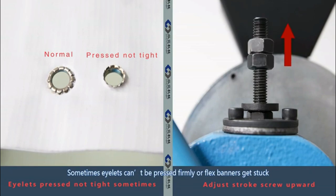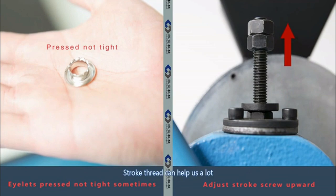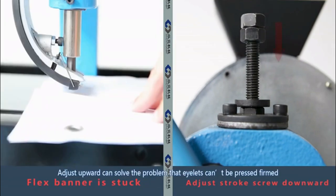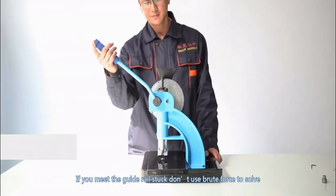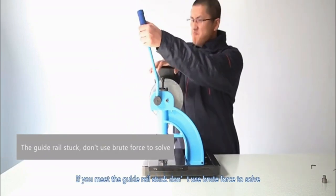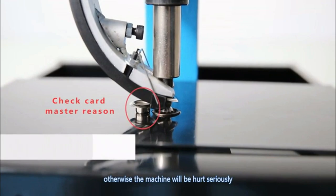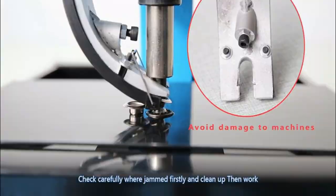Sometimes eyelets can't be pressed firmly or flex banners get stuck. Stroke thread can help us a lot. Adjust upward can solve the problem that eyelets can't be pressed firm. Adjust down can solve the problem that banners get stuck. If you meet the guide rail stuck, don't use brute force to solve. Otherwise, the machine will be hurt seriously. Check carefully where jammed first and clean up.